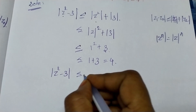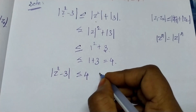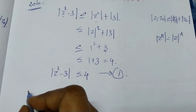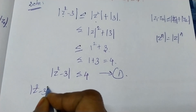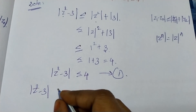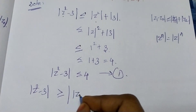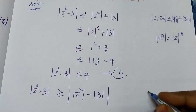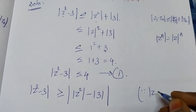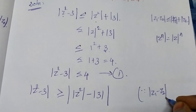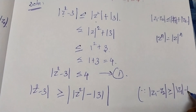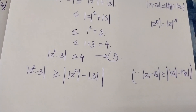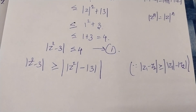This gives us equation 1: mod z squared minus 3 is less than or equal to 4. Now going in the other direction, mod z squared minus 3 is greater than or equal to mod z squared minus mod 3, by the reverse triangle inequality: mod z1 minus z2 is greater than or equal to mod z1 minus mod z2.